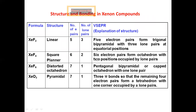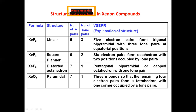Now structure and bonding in xenon compounds. Xenon difluoride has a linear structure. The number of bonding pairs is 2 and the number of lone pairs is 3. According to VSEPR, five electron pairs form a trigonal bipyramidal arrangement with three lone pairs occupying the equatorial positions.